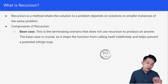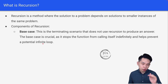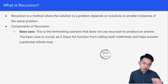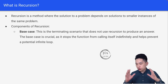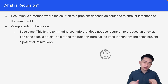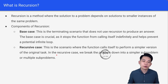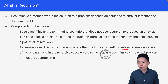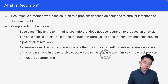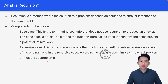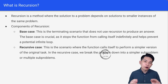For recursion, the base case is very important because for every recursion code that you write, you always need to have a base case, or else your recursion will just start an infinite loop. We will show some examples to understand better. The next component would be the recursive case — this is the scenario where the function calls itself to perform a simpler version of the original task. We break the problem down into simpler sub-problems. Therefore, recursion is made up of the base case as well as the recursive case.